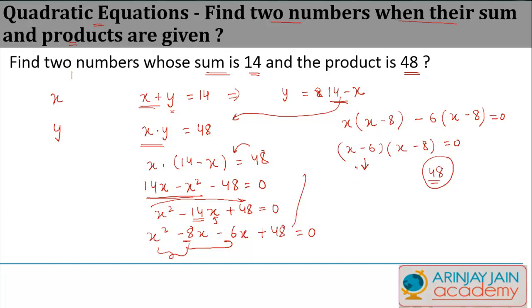So what are the two values that x can have? x minus 6 is equal to 0, which means x is equal to 6, or x minus 8 is equal to 0, which means x is equal to 8. x can actually assume two values. If x is equal to 6, how much is y? y is equal to 14 minus x, or in other words, 14 minus 6 is equal to 8.